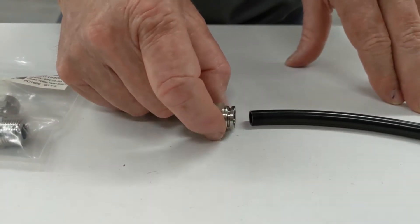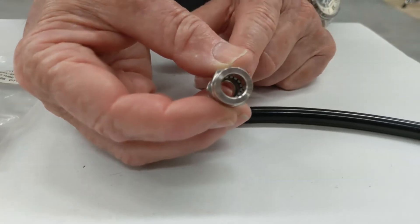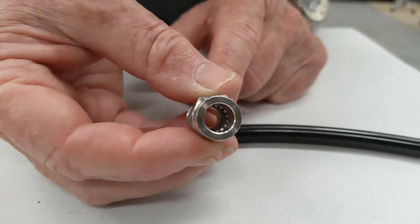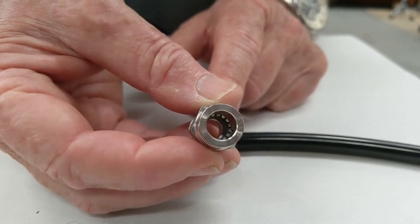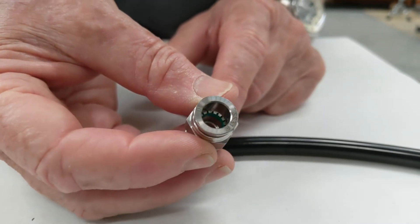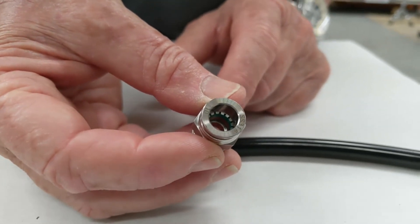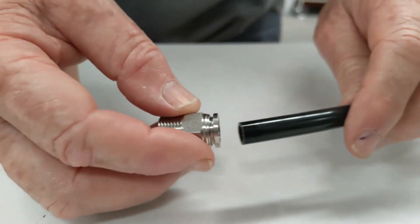They have a Viton internal O-ring and 316 stainless steel collets inside. You can see that, and they're designed to push into the nylon tube.